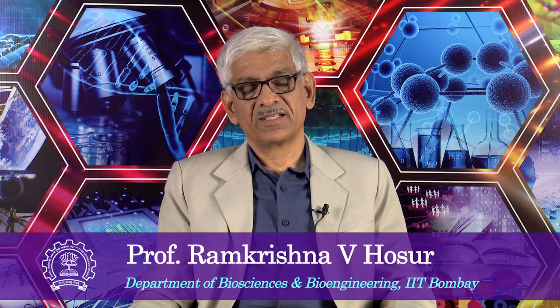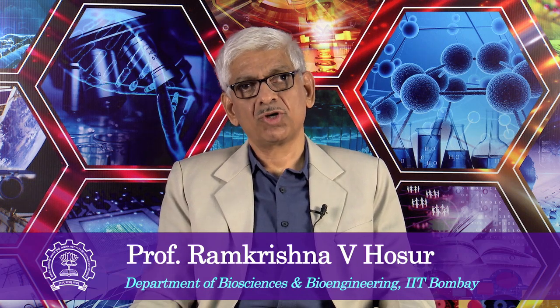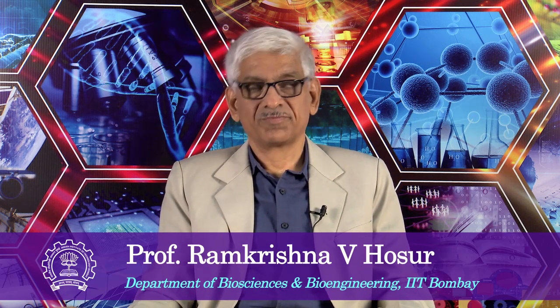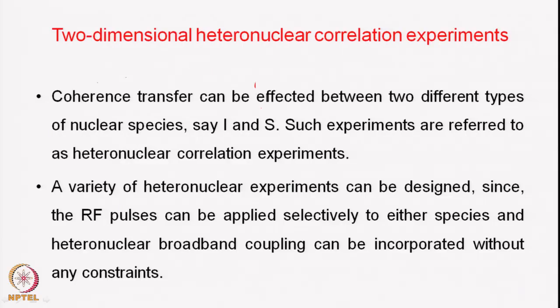So far we discussed the two-dimensional experiments which correlated same kind of spins, or what we call homonuclear correlation experiments. We are now going to go into another class of experiments which are called heteronuclear correlation experiments. Coherence transfer can be effected between two different types of nuclear species I and S — I can be a proton, S can be something else, carbon, nitrogen, whatever. Such experiments are referred to as heteronuclear correlation experiments.